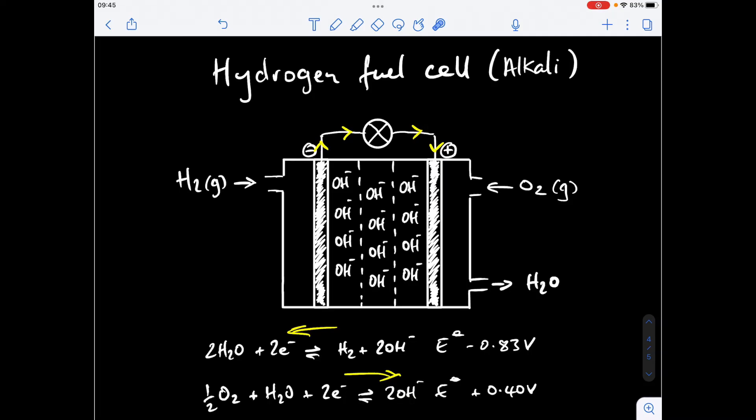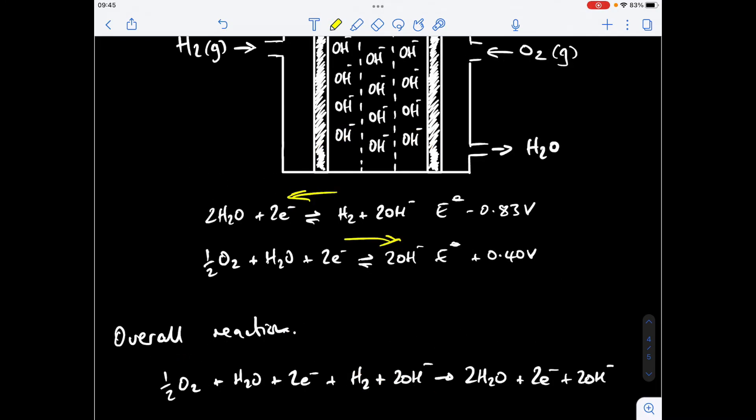Just as I did before let's derive the overall equation and then the E cell, the voltage of the cell. We're adding this half equation in this direction to this one in this direction which gives us that there. Again we can cancel down so we can take the electrons straight out, we can take those two hydroxide ions straight out and you can see we've got one H2 on the left and we've got two on the right.